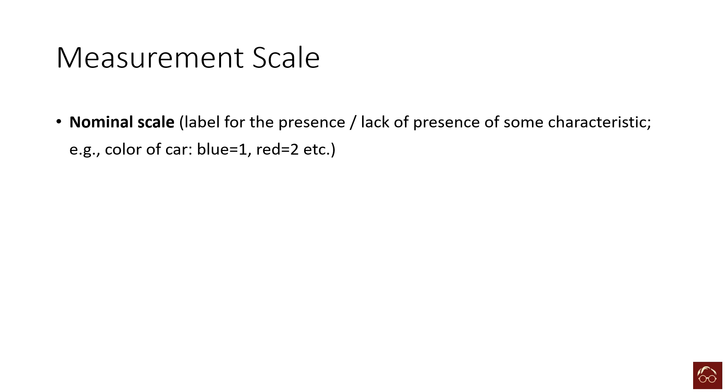Nominal scale is where we only have a label for the variable. For instance, if we have colors of car, blue and red, and we code blue as one and red as two, here we cannot say that red is better than blue or any difference between these two. These are just two labels given to two different types of categories.